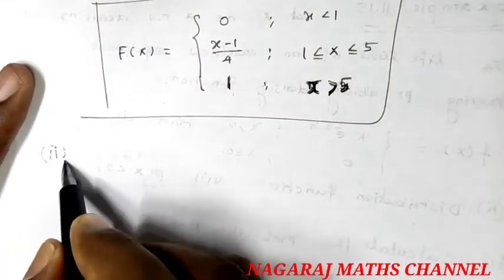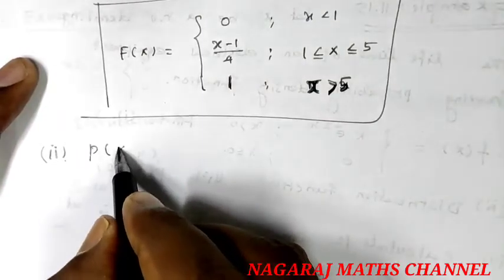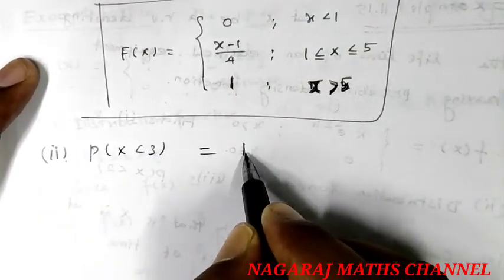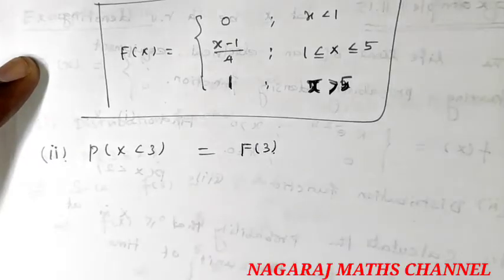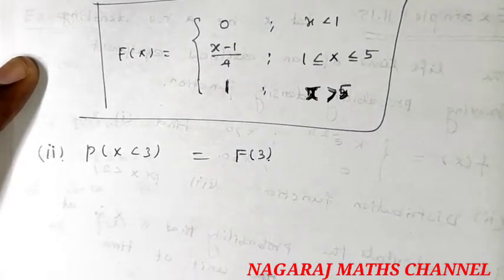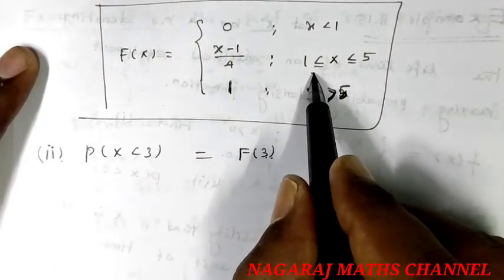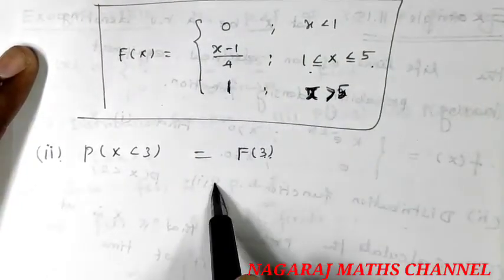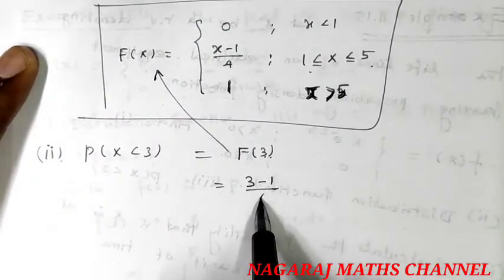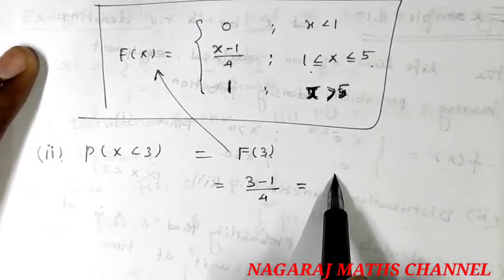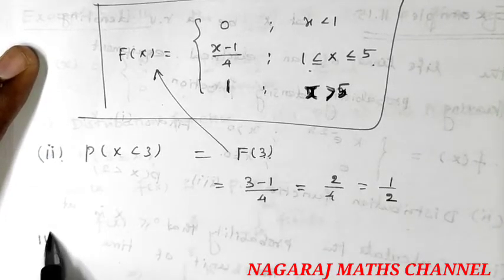Now, Question 2: what is the value of P(X < 3)? This equals F(3), the cumulative distribution function evaluated at 3.